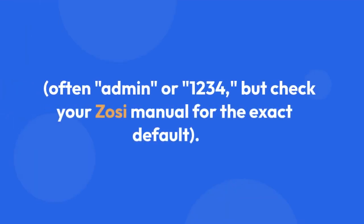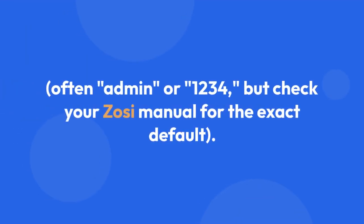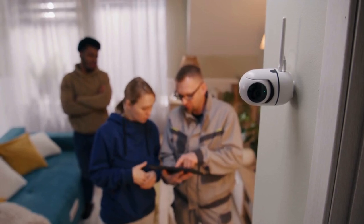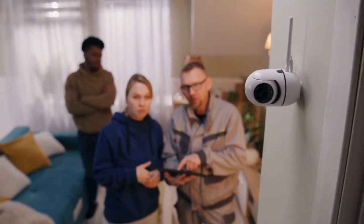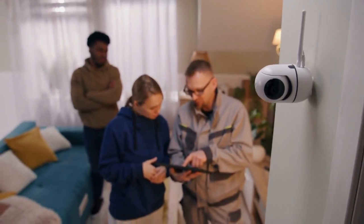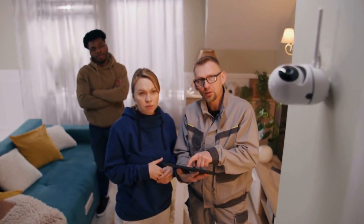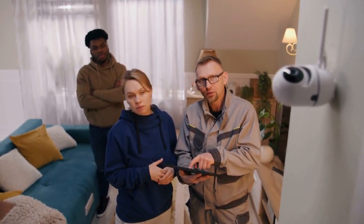This includes resetting the password to the default — often 'admin' or '1234' — but check your ZOSI manual for the exact default. After resetting, you'll need to access the DVR or NVR's interface via the web, app, or a monitor and set up a new password.